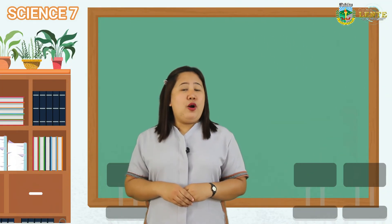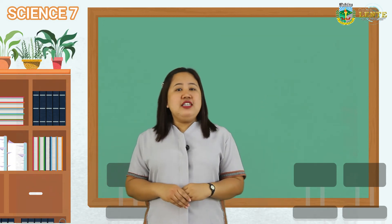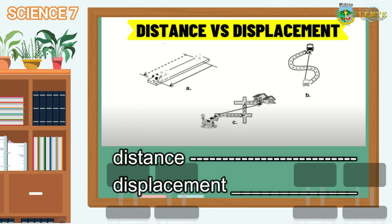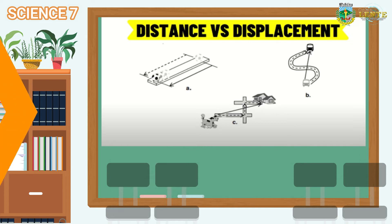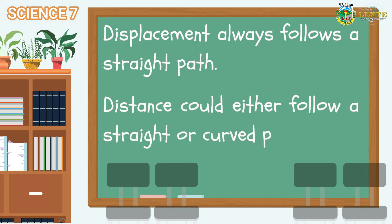Let us find out more about distance and displacement by examining this set of illustrations. Take note that the distance taken by an object is represented by broken lines while displacement is the straight solid line. Based on the illustration, how do distance and displacement differ? That's right! Displacement always follows a straight path while on the other hand, distance could either follow a straight or curved path.